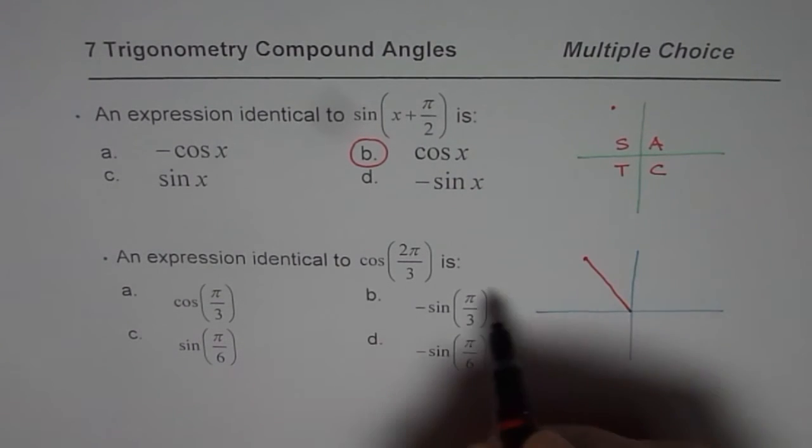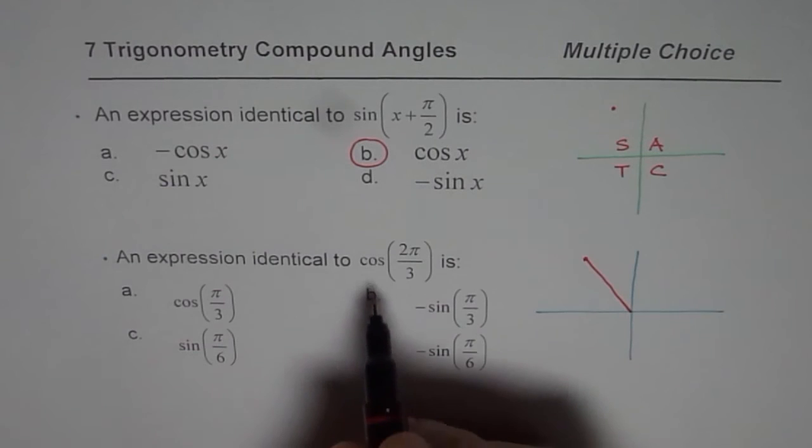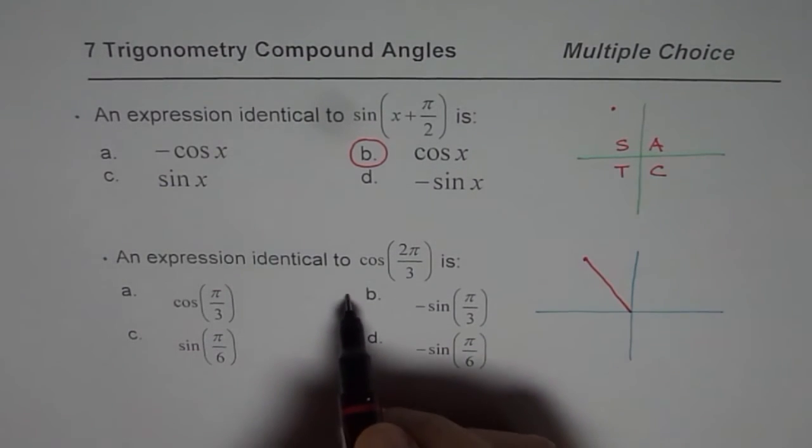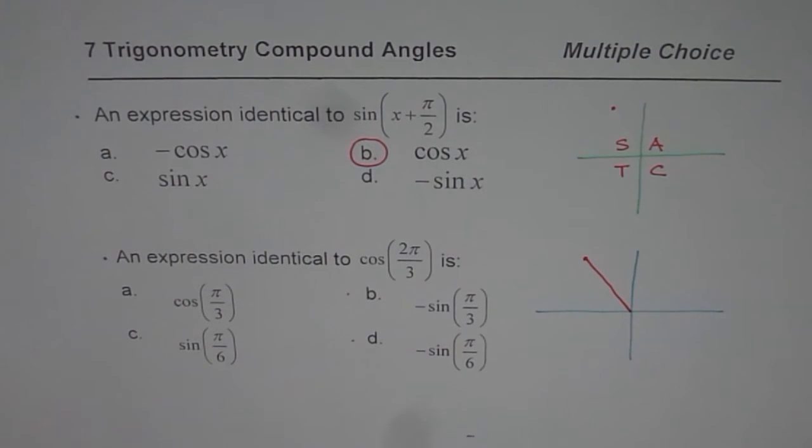Now 2π/3 also happens to be in quadrant 2. Since cos is negative, we are expecting a negative answer. So that means it will be one of these two.